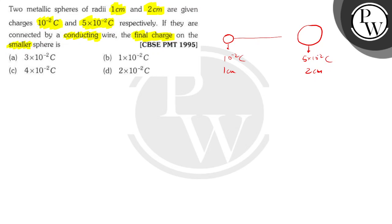When connected by a conducting wire, the potential on the smaller sphere is going to become equal to the potential on the larger sphere — the potential is going to be constant. The potential at any point on a sphere is given by the charge on the sphere divided by 4 pi epsilon naught times the radius.